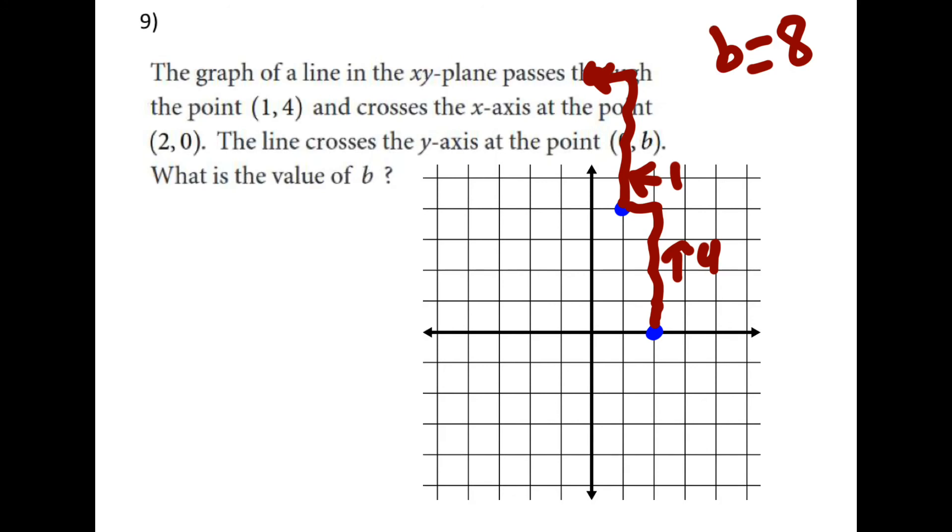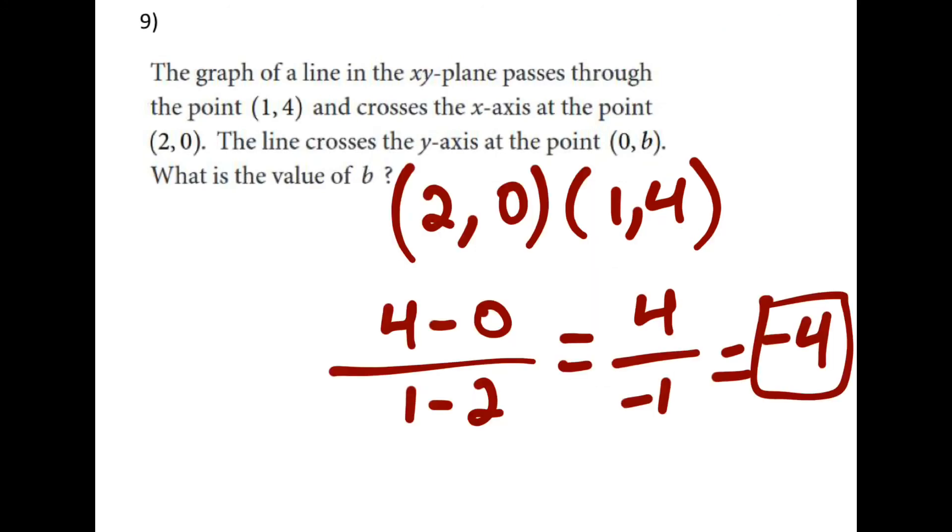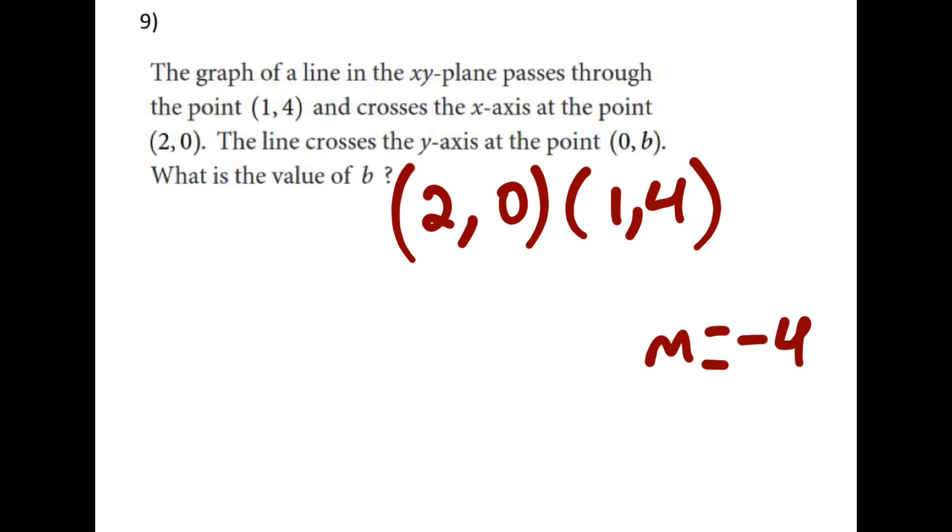But maybe you didn't take the graphic route. Maybe instead you use these two points in a slope formula and figure out that the slope is negative 4. Then, given a slope and pick one of the points, let's say we picked 1 4. We can plug these into y equals mx plus b. We plug in the 4 for the y, the 1 for the x, and the negative 4 for the m. And then we solve for b.